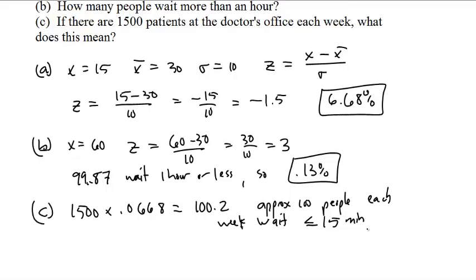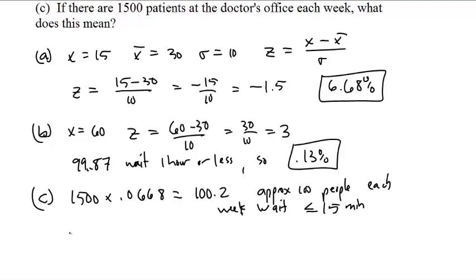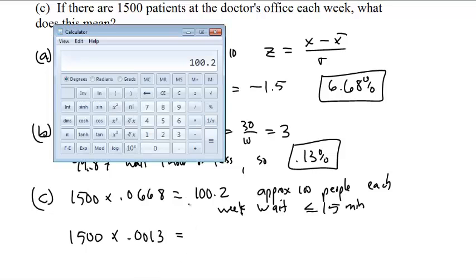What about 1,500 for the other people? So that would be 1,500 times, not 0.13, but 0.0013, because this is 0.13%, and that is 1,500 times 0.0013 is 1.95.